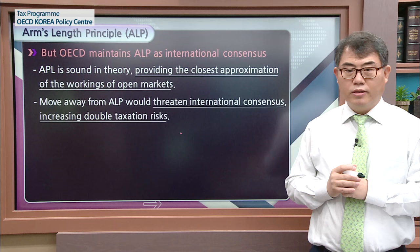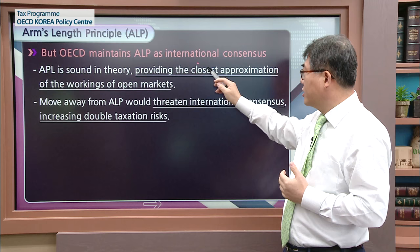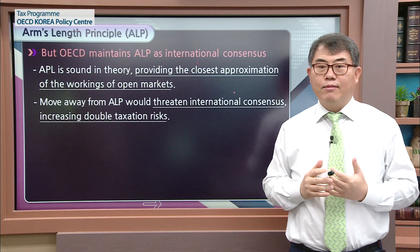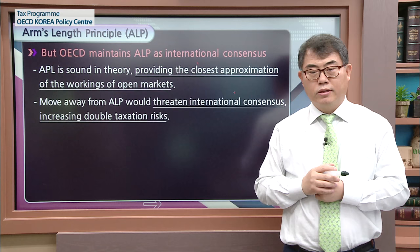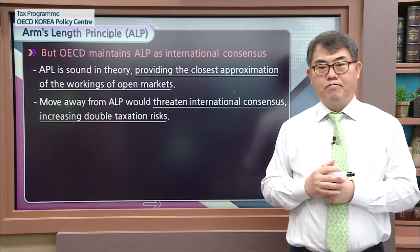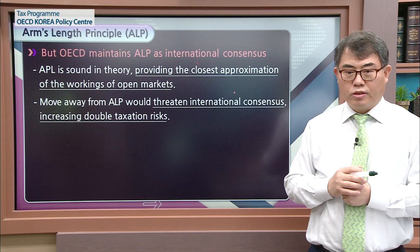However, the OECD maintains the arm's length principle as international consensus, because in theory it is quite sound, providing the closest approximation of the workings of the open market. If they move away from the arm's length principle, they would have difficulties resolving the double taxation issue and may find no solution about double taxation if they rely on some other mechanism.